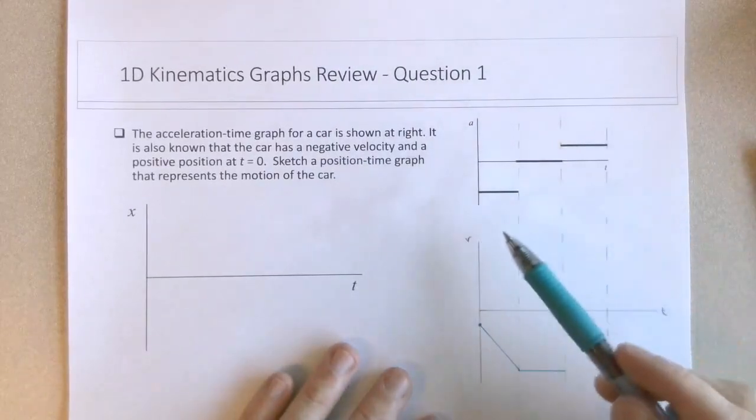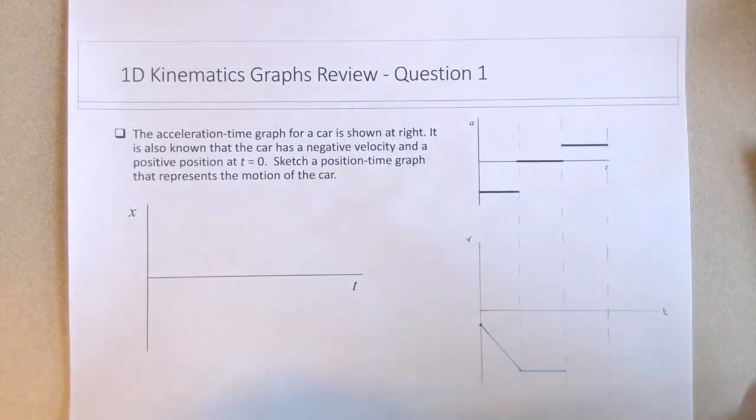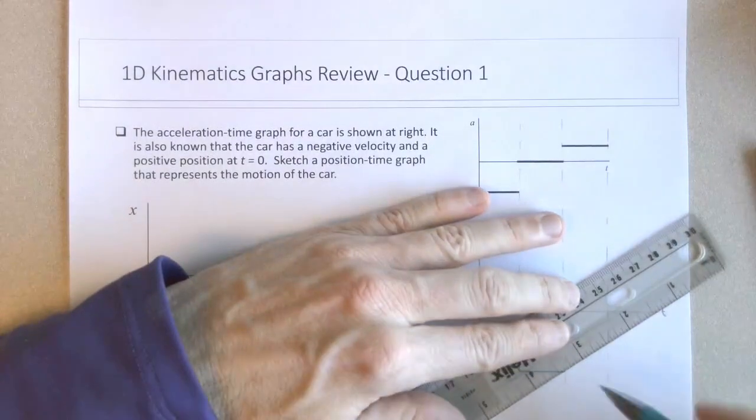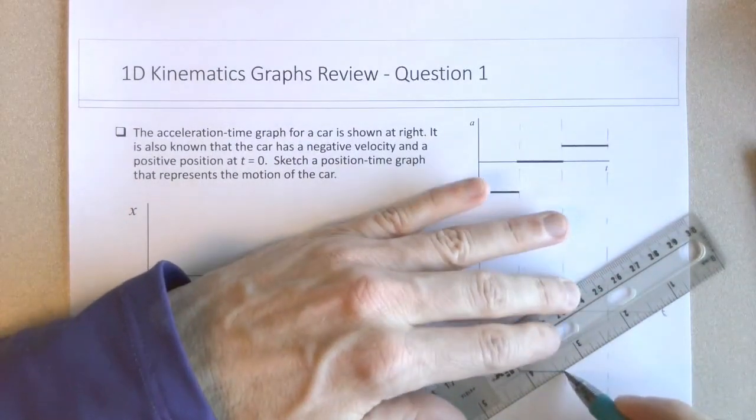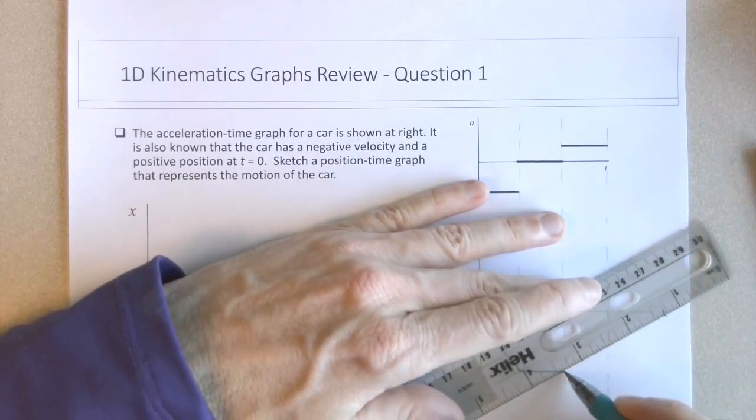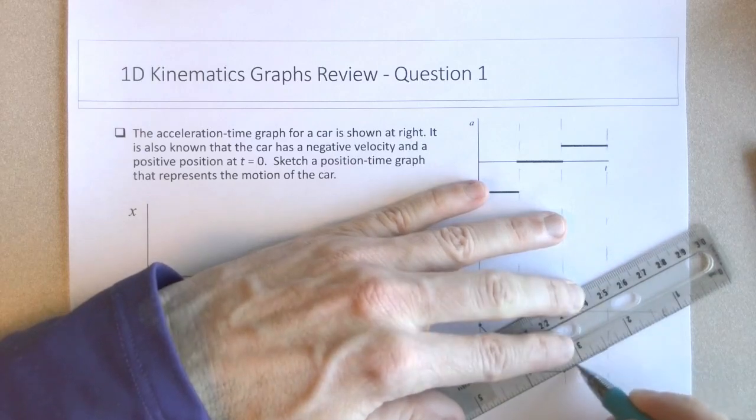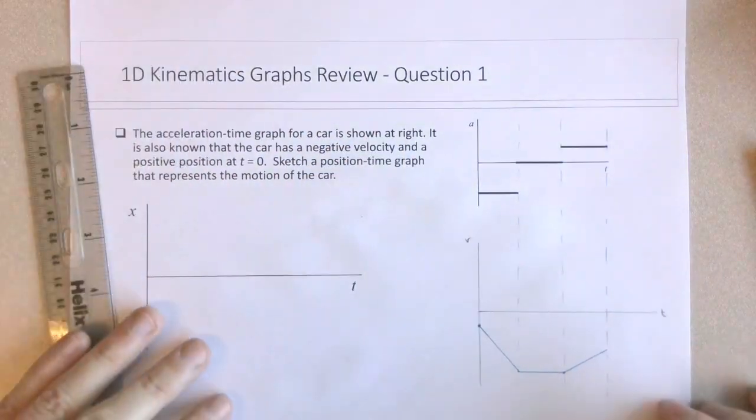So as I mentioned, that this acceleration, its absolute value is not as large as this, so it should have a shallower slope. So the Vt curve would look something like this.